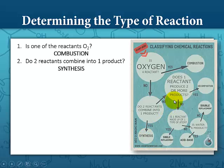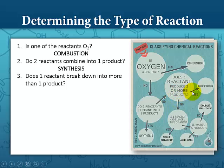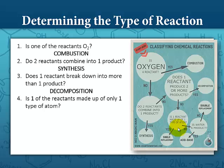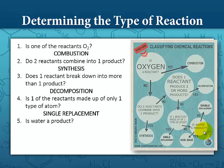If two reactants don't combine into one product, we ask: does one reactant break down into more than one product? If so, it's a decomposition reaction. If not, we ask: is one reactant made up of only one type of atom? If yes, it's a single replacement reaction. If no, we ask: is water a product? If water is a product, it's an acid-base reaction, which is also a double replacement reaction. If water is not a product, then it's a double replacement reaction.